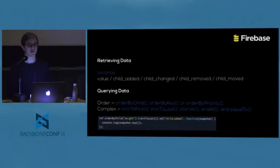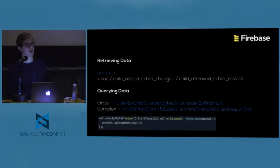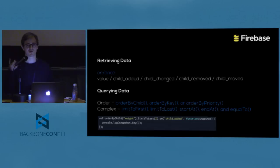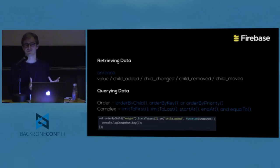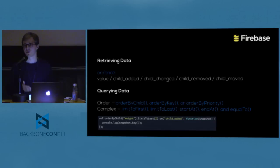Regarding how you retrieve data: you have on-value as shown earlier, or once-value which triggers only once. When you do it on a collection, on-value gives you a snapshot of the whole collection. The other way — more in the real-time mindset — is to use child-added, child-changed, child-removed, and child-moved. These are collection-oriented events. Rather than getting a snapshot of data at a point in time, you think in terms of what new items have arrived, which have been removed, and so on. That's actually what the Backbone Firebase integration does — it matches these events with Backbone.